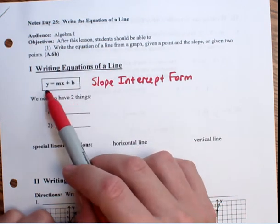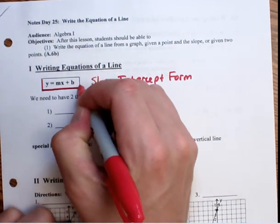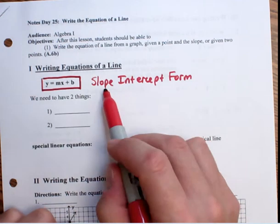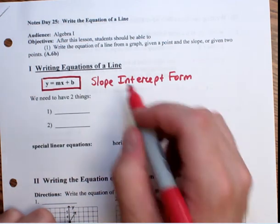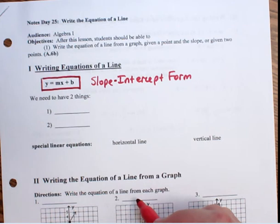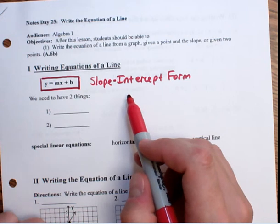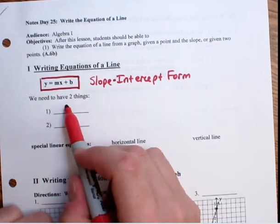Now, the equation that we're going to use is y equals mx plus b. This is the way we're going to think about it. This is called the slope-intercept form. The slope-intercept form of a line. And the reason we call it slope-intercept is because there are two things that we need to write the equation.